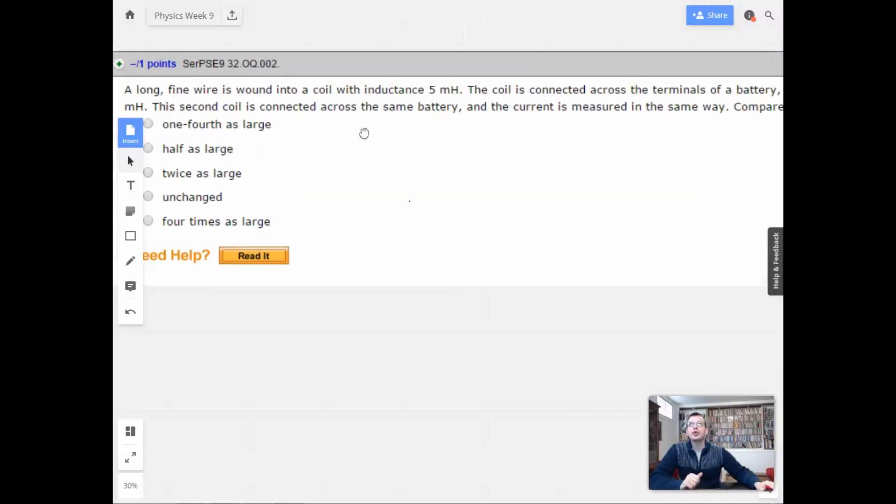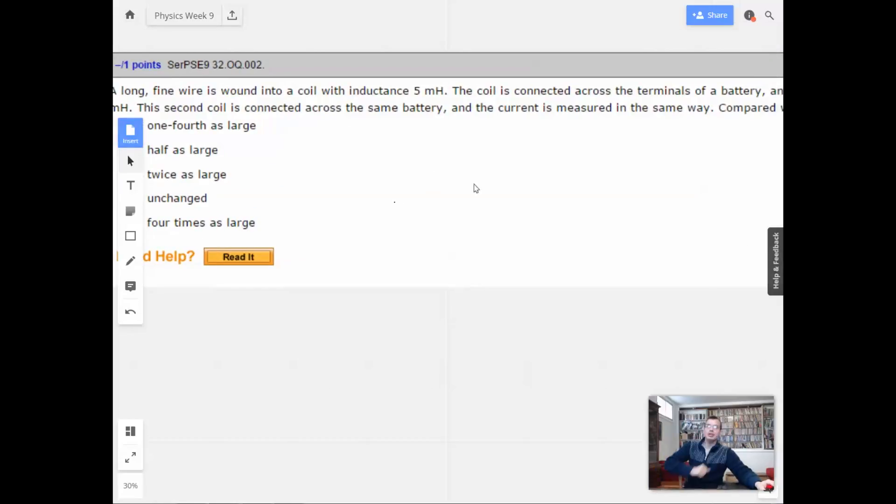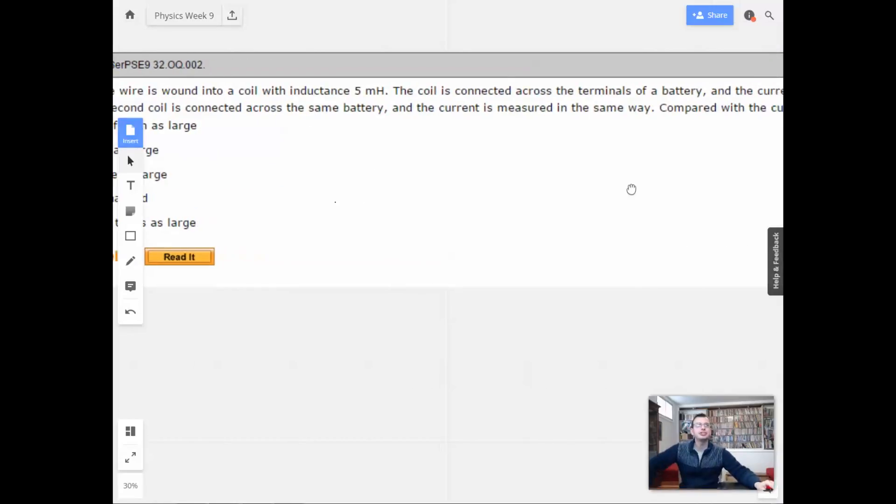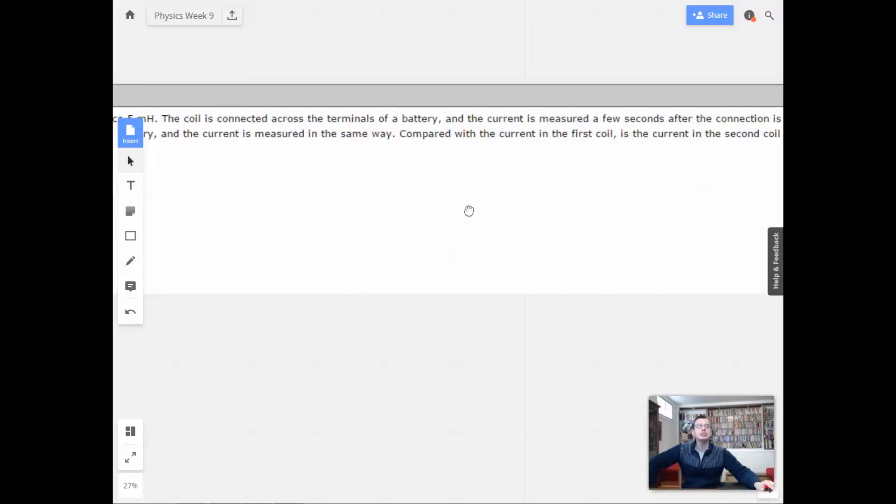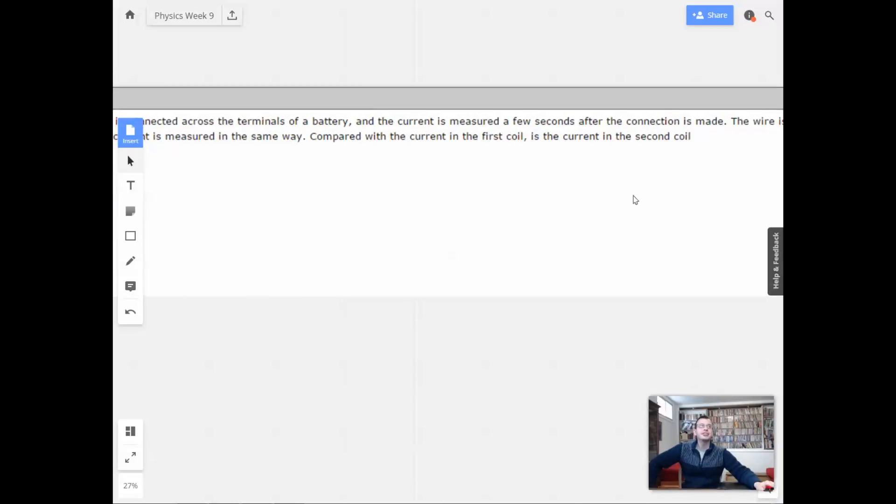A long fine wire is wound into a coil with an inductance of 5 millihenries. The coil is connected across the terminals of the battery and the current is measured a few seconds after the connection is made.